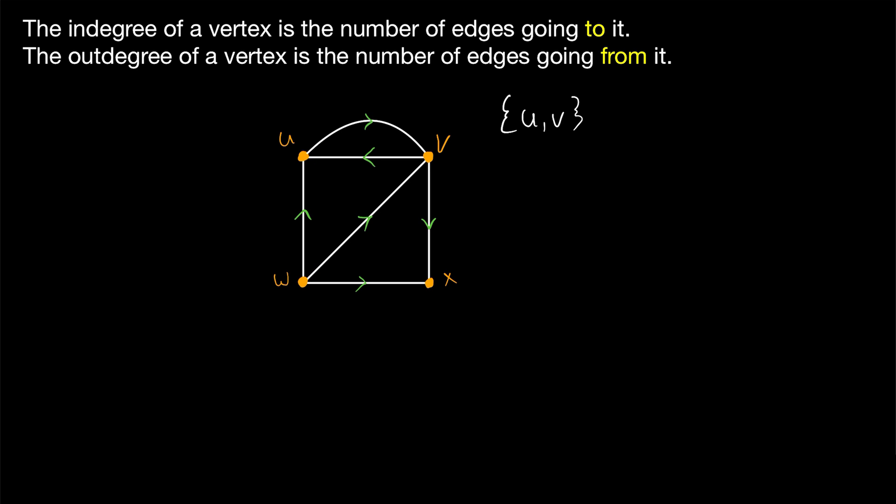So you may recall that we define directed edges of digraphs as ordered pairs. So this directed edge here is represented by the ordered pair W, U. W comes first because the edge is leaving W, and it's going to U. So U comes second in the ordered pair. And these directed edges are also called arcs.